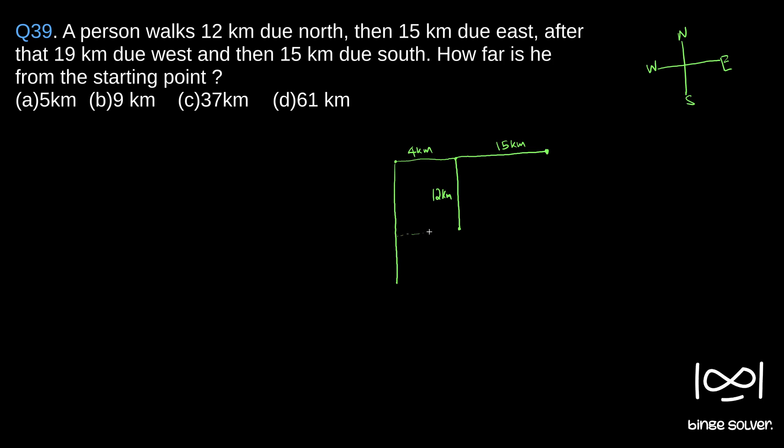But this distance is 12 kilometers, then he traveled 15 kilometers, right? So 12 plus 3 kilometers, so he traveled three more kilometers and he reached here. So how far is he from the starting point? So from the starting point he is this far.